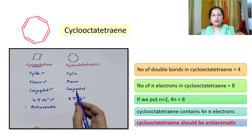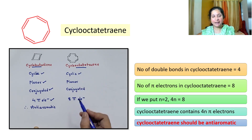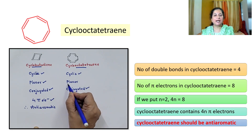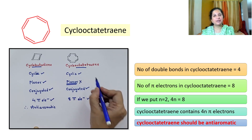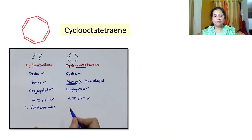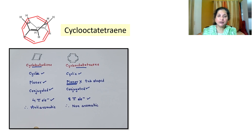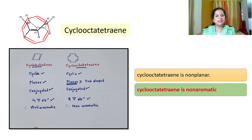Now let's check for cyclooctatetraene. I have shown you the structure. Looking at cyclooctatetraene, you might think the compound is cyclic and conjugated — it contains four double bonds, meaning eight pi electrons — and conclude it is anti-aromatic since it seems to satisfy all three conditions and contains 4n pi electrons. But in fact the molecule is not planar; it is tub-shaped. Since cyclooctatetraene breaks the condition of planarity, it is not anti-aromatic or aromatic — it is non-aromatic.